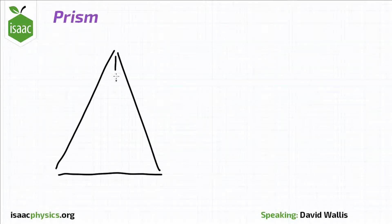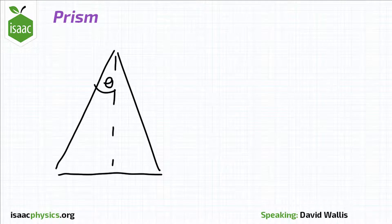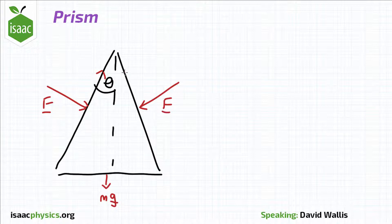The diagram shows the forces acting on the prism. There is the weight mg downwards, the force F due to pushing on the prism, and the corresponding frictional force Fr.